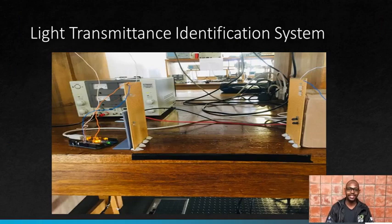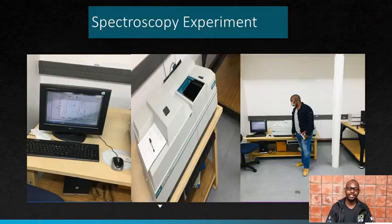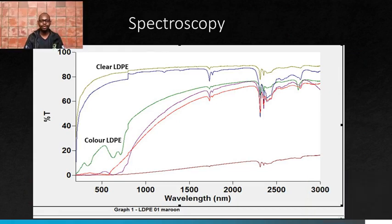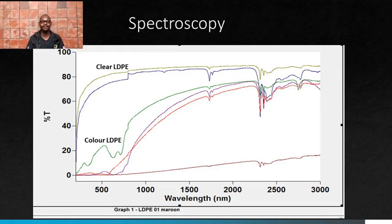Moving on to the light identification system, we conducted an experiment to find the spectroscopy of the film plastics. From the spectroscopy, we noticed that at wavelengths of 850 and 940 nanometers, we can distinguish between clear and color film plastics.